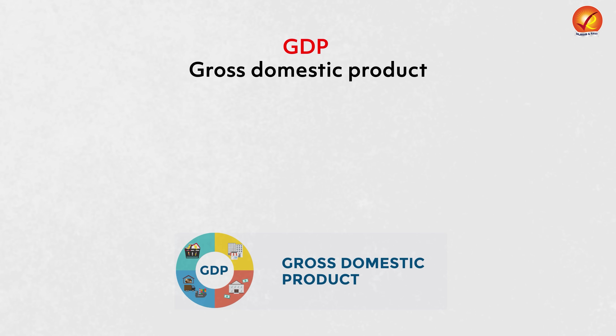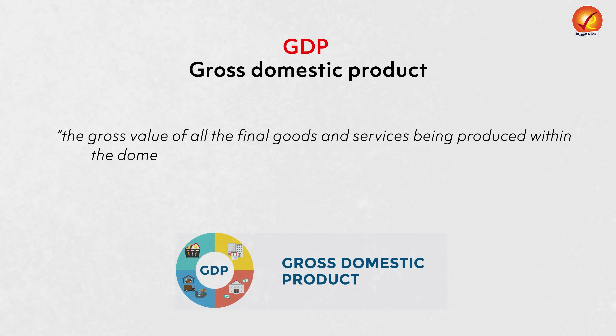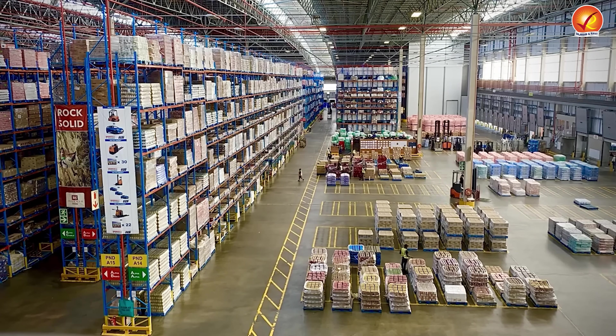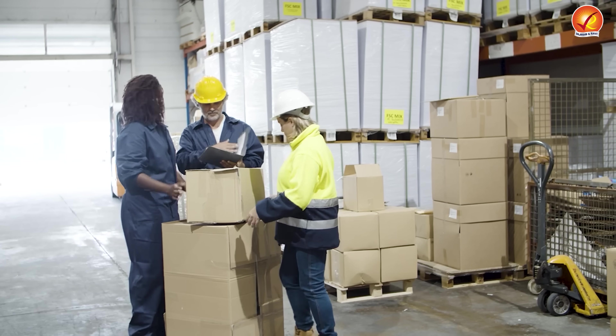How do you calculate GDP — gross domestic product? It simply means the gross value of all the final goods and services being produced within the domestic territory of a country in a particular financial year. So if I have to calculate GDP, I will take the quantity of goods produced multiplied by the price of the goods produced, and I will get the value of the goods produced — that is GDP.